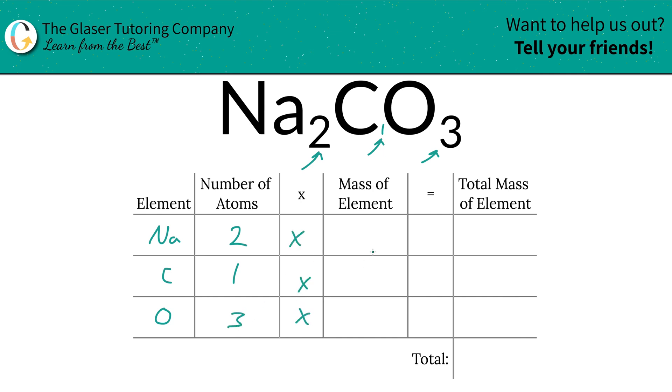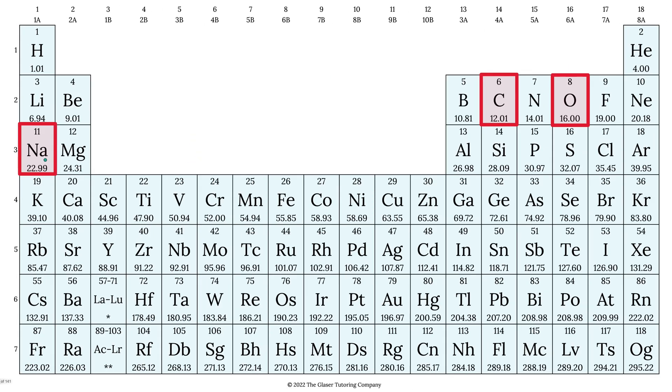So we are simply going to multiply those number of atoms by the mass of each particular element and those masses are found on the periodic table. Sodium's mass is 22.99, carbon is 12.01 and oxygen is going to be 16.